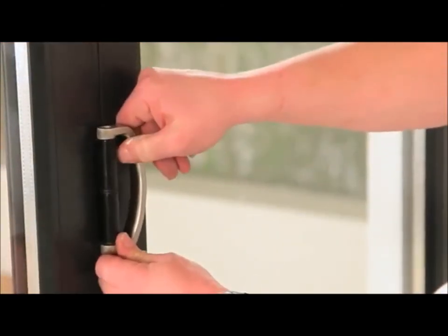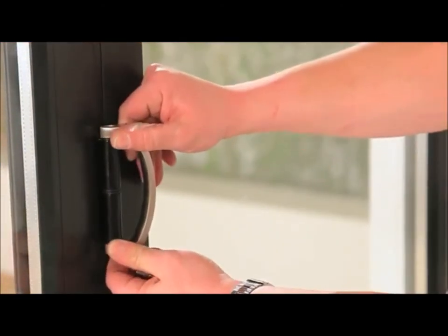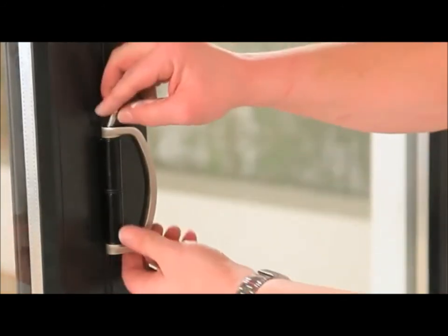If the doors open outwards, fit the supplied D handle around the hinge above the slave handle.